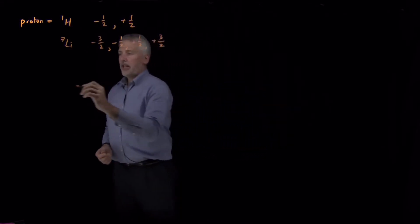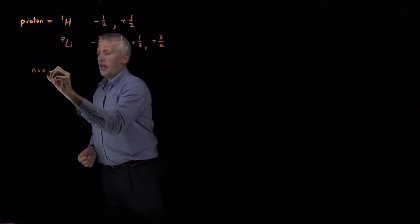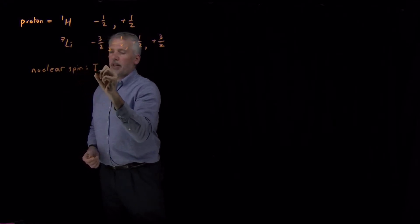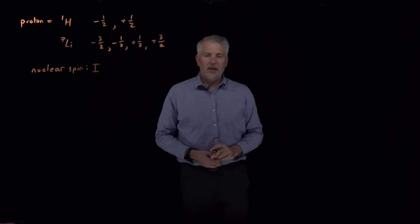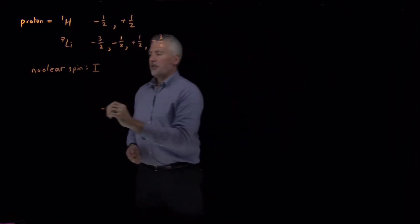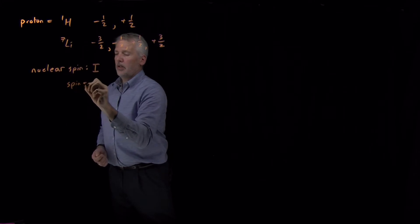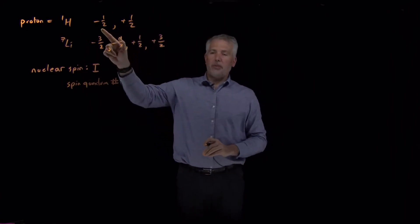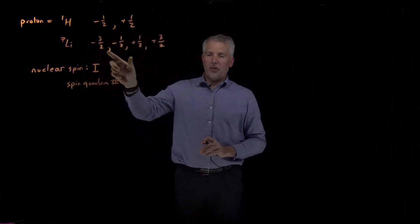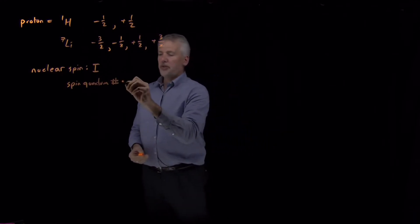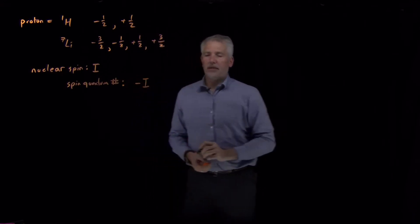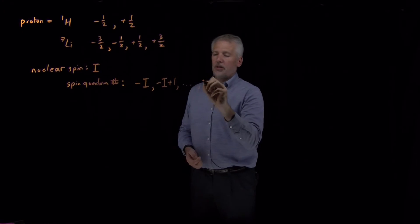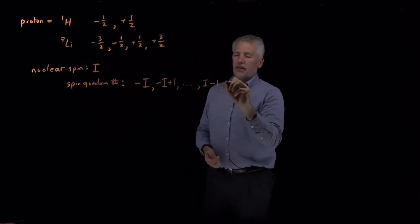For the general case, every different nucleus can be characterized by some value i that we call the nuclear spin. Just like for an electron or a proton, the spin quantum number can range from negative i, going up one unit at a time, until the largest value it can have is positive i.